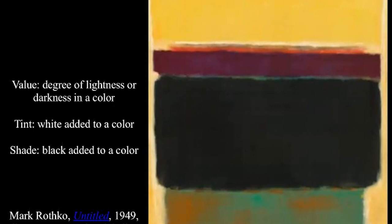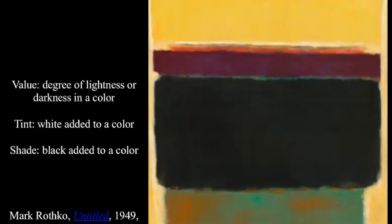As you can see here, Rothko added some white to his yellow — so he tinted that yellow. He added black to this green, you can kind of see it in here. Up in this purple as well, there's a little black in it. That's called shade. So when we add white to a color we get tint, when we add black to a color we get shading. All of these are referring to the value of the color, or the value of that hue.